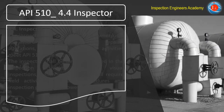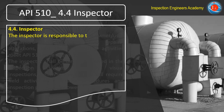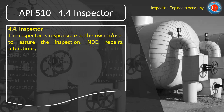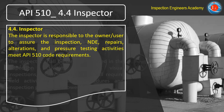API 510 code, paragraph 4.4, briefly explains the authorized inspector responsibility. Usually the inspector is assigned by the owner or user, and he is responsible to assure the inspection, non-destructive examination, repairs, alterations, and pressure testing activities are performed in accordance with the API 510 code requirements.